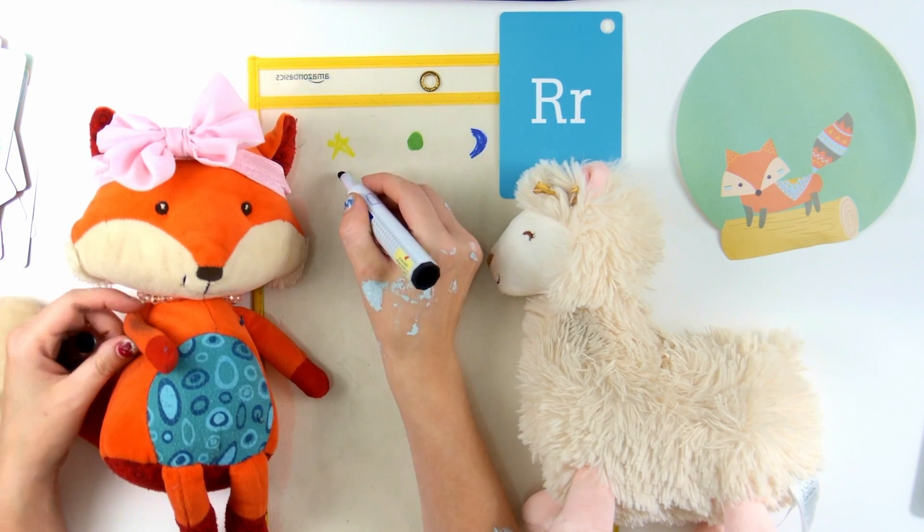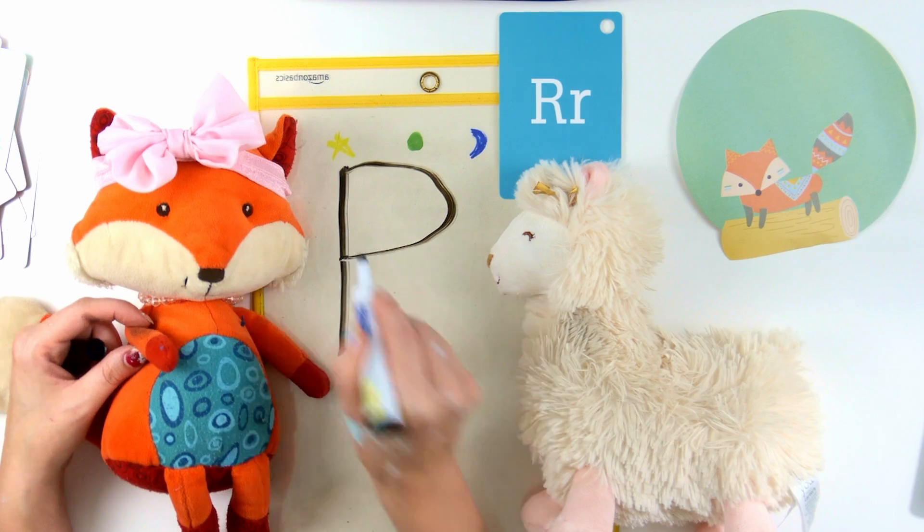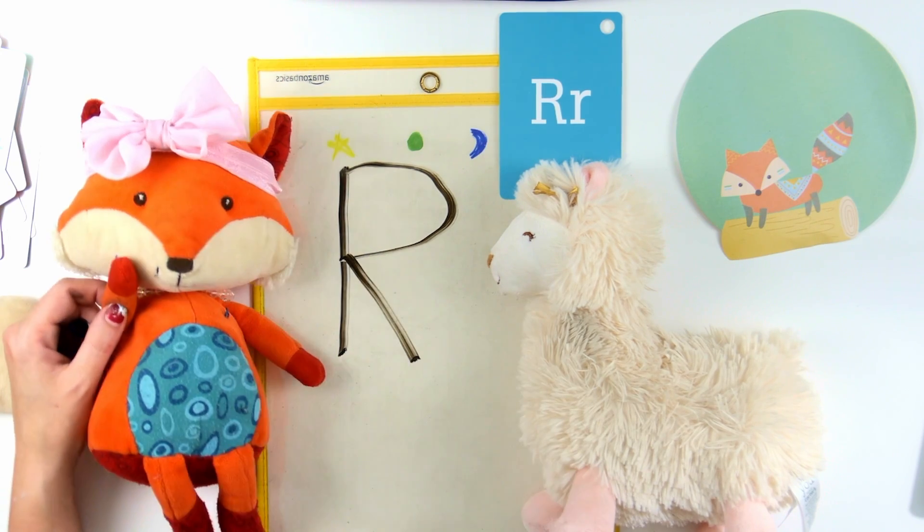So for R, we're going to start at the star. Go down the ladder. Down the ladder! Rainbow. Rainbow! Slide. Slide!